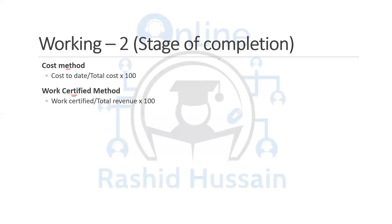Working number two is the stage of completion. The first method is the cost method: cost to date divided by total cost, multiplied by 100. For example, if total cost is 200 and cost to date is 50, that gives 25% — meaning 25% of the cost has been spent, so 25% of the contract has been completed.